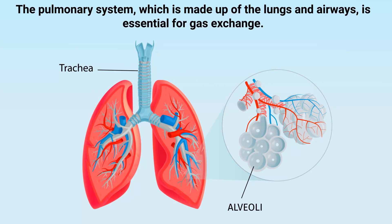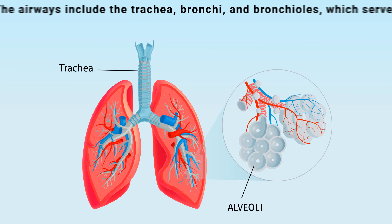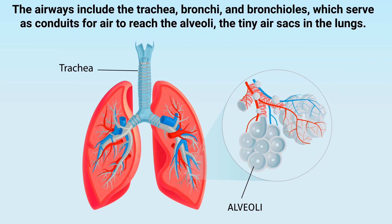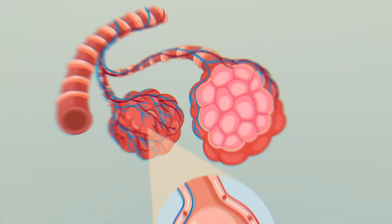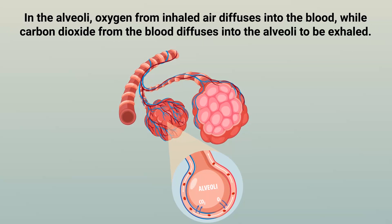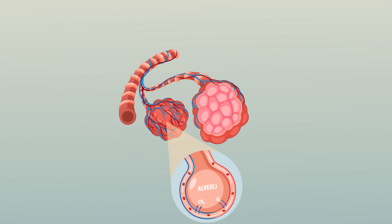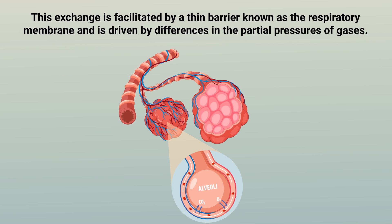The pulmonary system, which is made up of the lungs and airways, is essential for gas exchange. The airways include the trachea, bronchi, and bronchioles, which serve as conduits for air to reach the alveoli, the tiny air sacs in the lungs. In the alveoli, oxygen from inhaled air diffuses into the blood, while carbon dioxide from the blood diffuses into the alveoli to be exhaled. This exchange is facilitated by a thin barrier known as the respiratory membrane and is driven by differences in the partial pressures of gases.